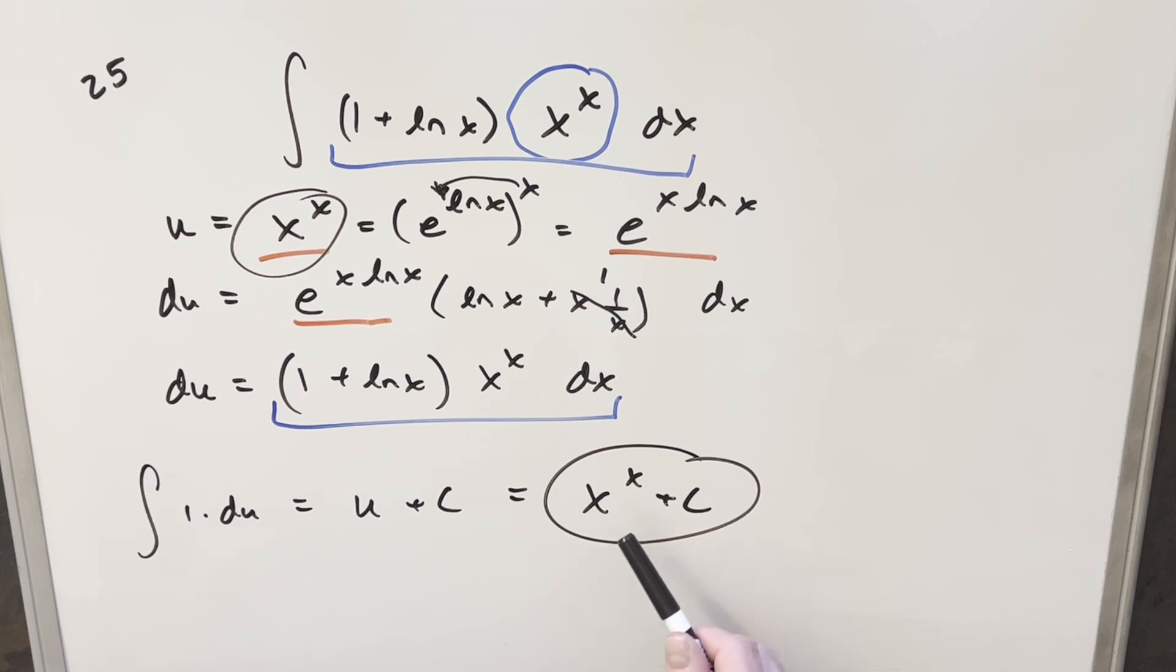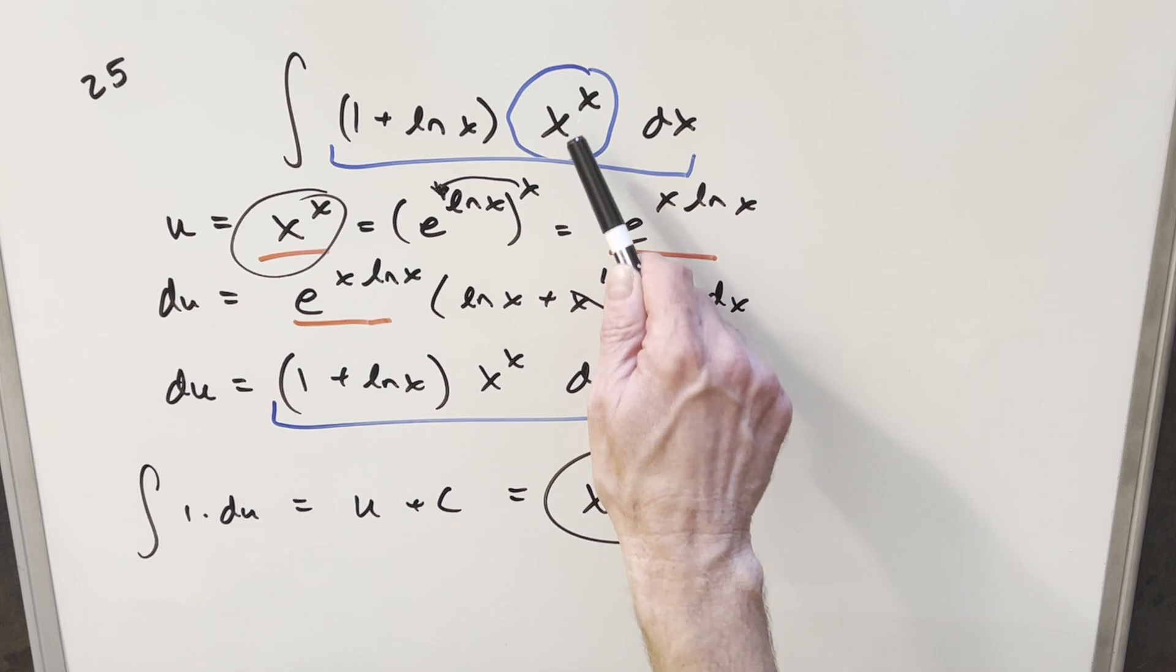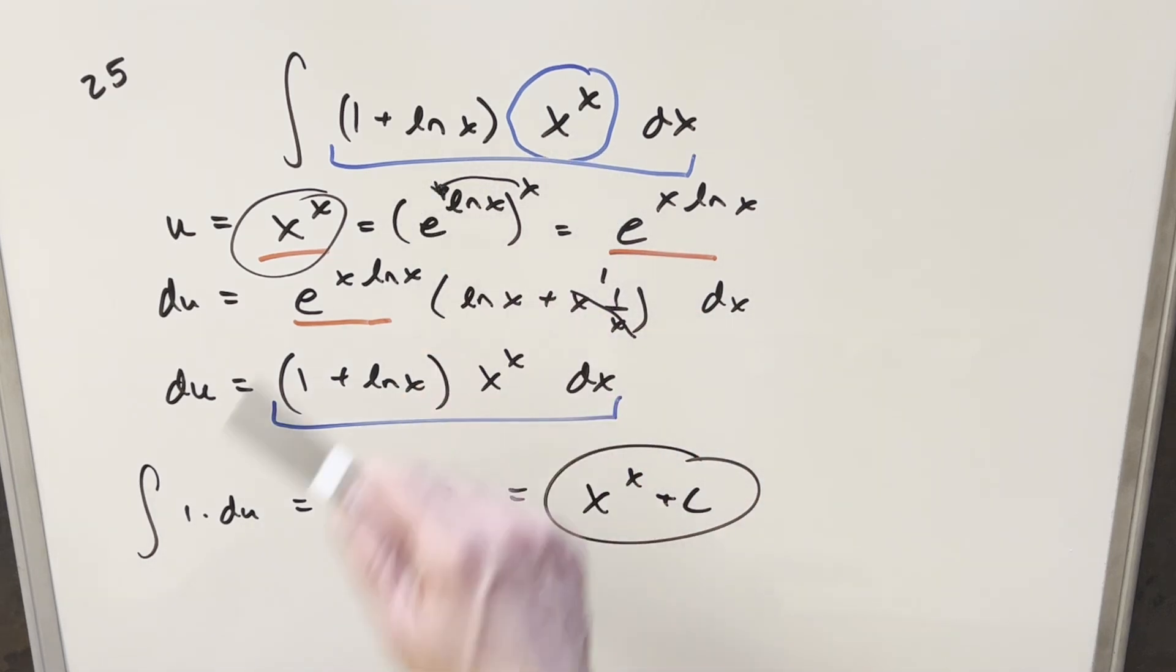Of course, this would be really easy and fast, like a 3-second integral, if you just memorize the fact that x to the x, the derivative of it, is this here, x to the x times 1 plus ln x.